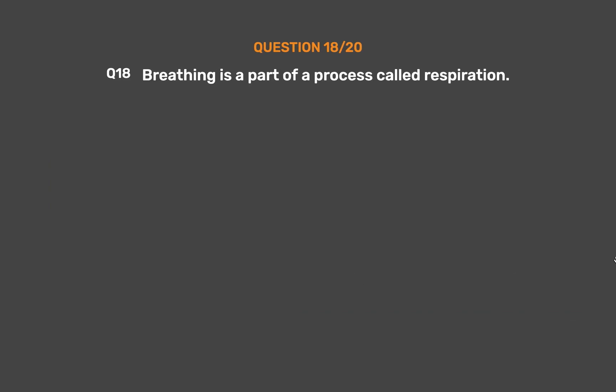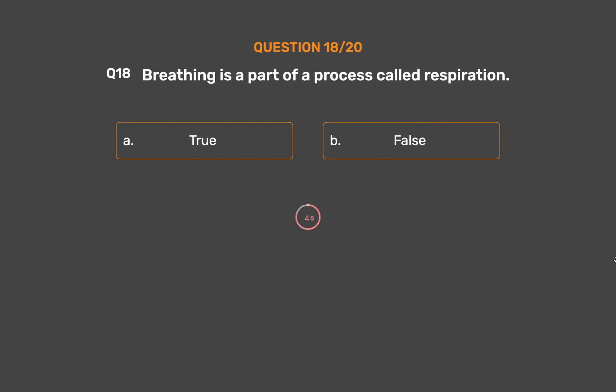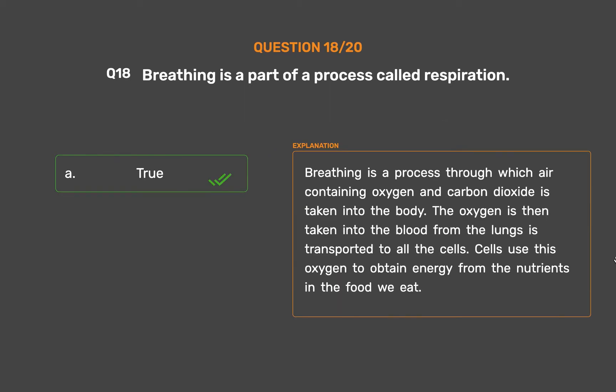Question 18. Breathing is a part of a process called respiration. Option A: True. Option B: False. The correct answer is True. Breathing is a process through which air containing oxygen and carbon dioxide is taken into the body. The oxygen is then taken into the blood from the lungs and transported to all the cells. Cells use this oxygen to obtain energy from the nutrients in the food we eat.